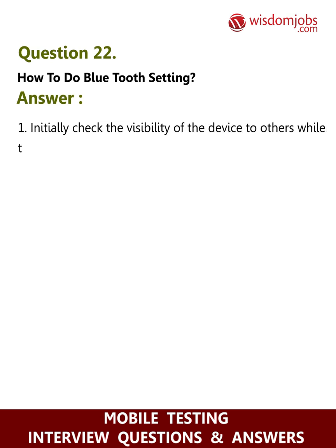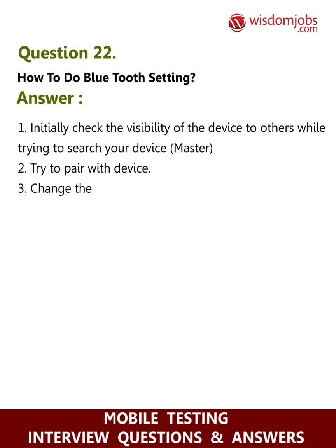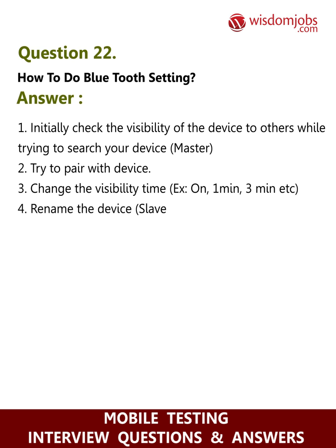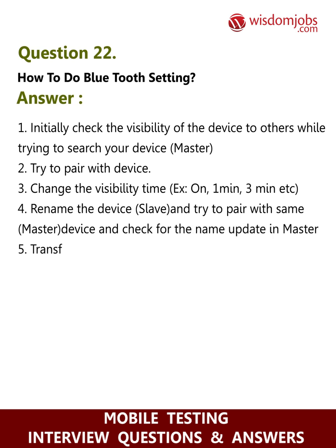Question 22: How to do Bluetooth testing? Answer: 1) Initially check the visibility of the device to others while trying to search your device as master. 2) Try to pair with a device. 3) Change the visibility time to 1 minute, 3 minutes, etc. 4) Rename the slave device and try to pair with the same master device, then check for the name update in master. 5) Transfer files from master to slave and slave to master.